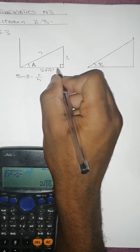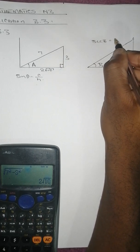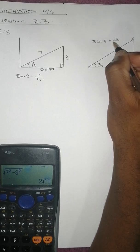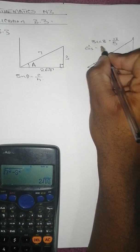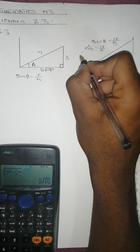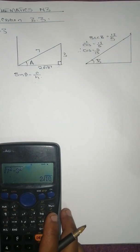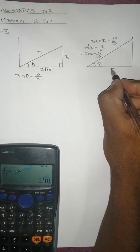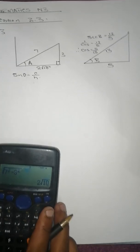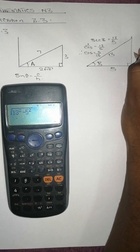We are also told sec b equals 13 over 5. Since sec b equals 1 over cos b, cos b equals 5 over 13. Since cosine is adjacent over hypotenuse, the adjacent is 5 and hypotenuse is 13. Using Pythagoras, the opposite side is the square root of 13 squared minus 5 squared, which equals 12.